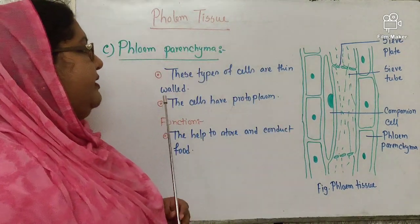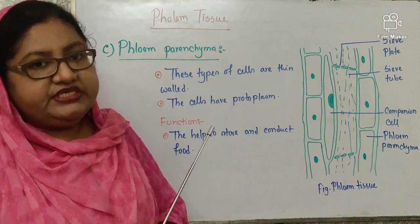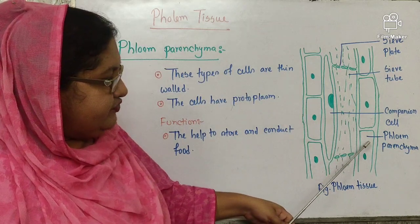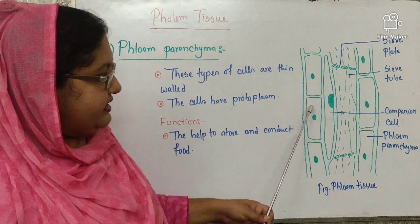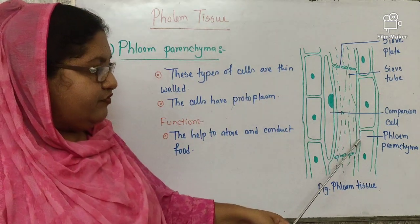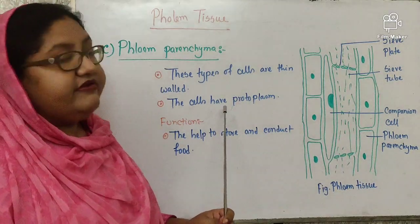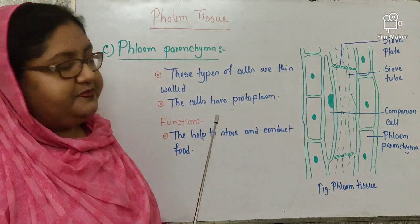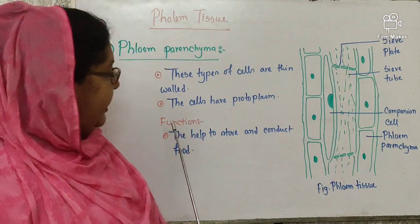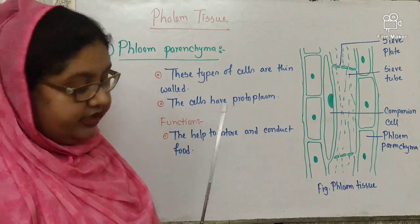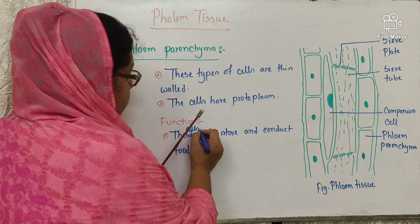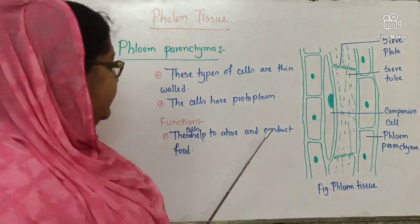Next, phloem parenchyma. The parenchyma present in phloem is called phloem parenchyma. In the diagram, these cells are phloem parenchyma. These cells have thin walls, and the cells have protoplasm. The function of phloem parenchyma: these cells help to store and conduct food.